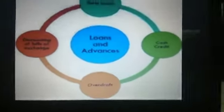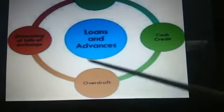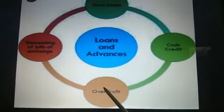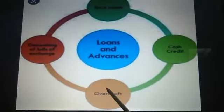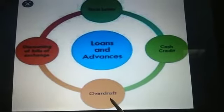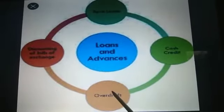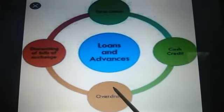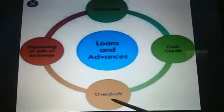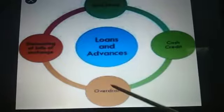Then comes overdraft. It is a facility given generally to current account holders. They can withdraw more than what is there in their account. Suppose a person has 1 lakh rupees but wants to pay 1 lakh 50,000 — he can withdraw 1 lakh 50,000 from his current account. That extra 50,000 will be treated as a loan and he will pay interest on that amount for the number of days he uses the money. There is a limit to an overdraft — the bank specifies how much extra can be withdrawn.